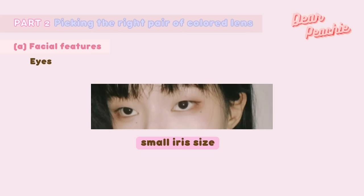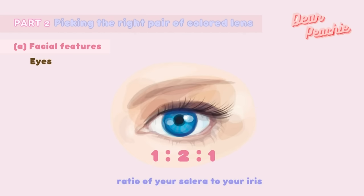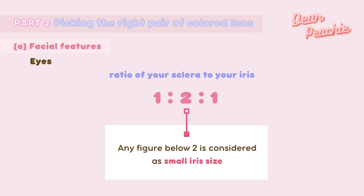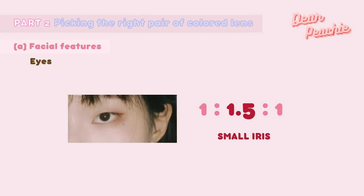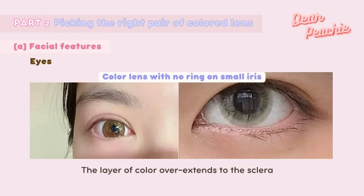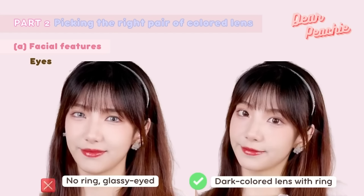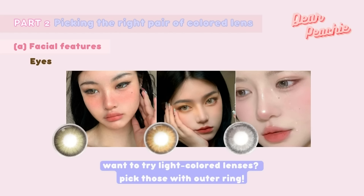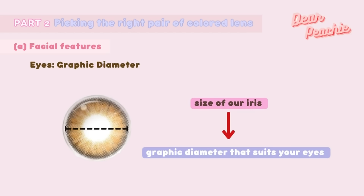If your iris size is small, colored lenses with no outer ring will not be suitable for you. To check if you have a small iris, look at the ratio of your sclera to your iris — it should ideally be 1:2:1; any figure below two is considered a small iris. Lenses with no outer ring only add a layer of color but don't help dilate the iris. Wearing such lenses on a small iris causes the color to overextend into the sclera, giving a glassy-eyed stare. Always pick lenses with outer rings if you want to try light colored lenses.